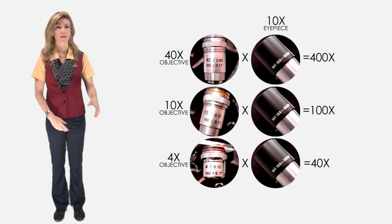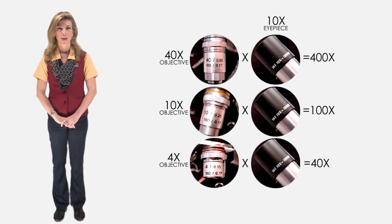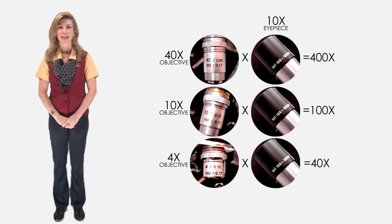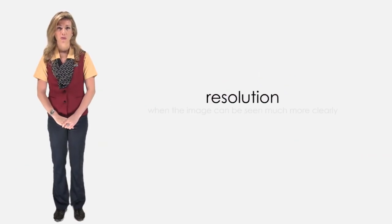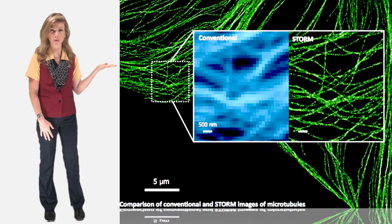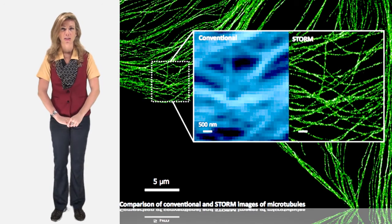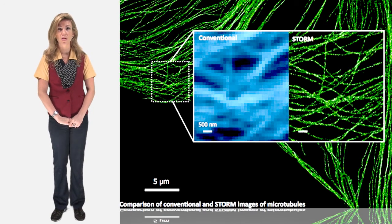The microscopes we just saw focus light through lenses to produce a magnified image. However, other microscopes can produce a more detailed image. This is called resolution, when the image can be seen much more clearly. Here in this picture of microtubules, the conventional microscope image does not have nearly as good a resolution as the storm microscope image does.